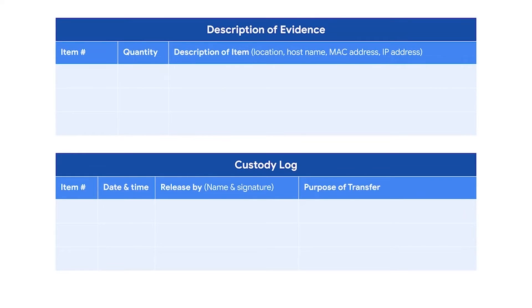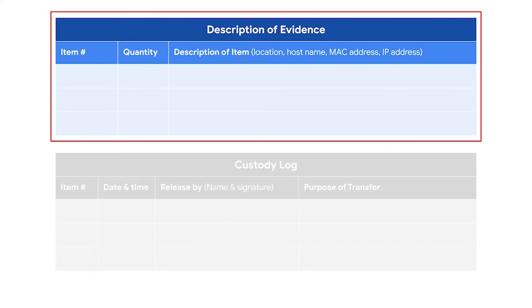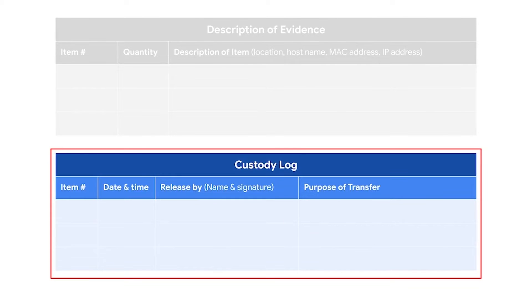Just like other documentation types, there is no standard template for what the chain of custody form should look like, but they do contain common elements. First, there should be a description of the evidence, which includes any identifying information like the location, host name, MAC address, or IP address. Next is the custody log, which details the name of the people who transferred and received the evidence, as well as the date and time the evidence was collected or transferred and the purpose of the transfer.